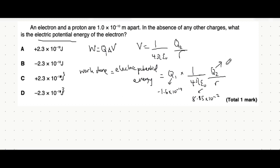And then q2 is the charge of a proton which is the same magnitude but this time a positive charge. By the way charge is measured in coulombs. The value of r which is the distance between them is 1 times 10 to the minus 10.